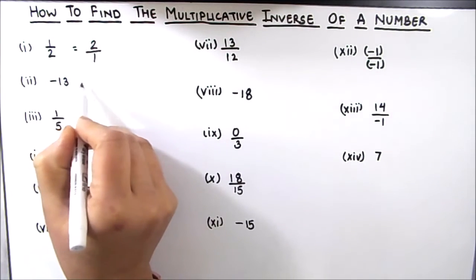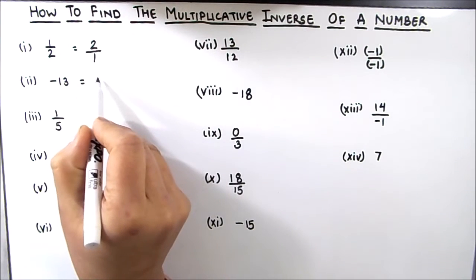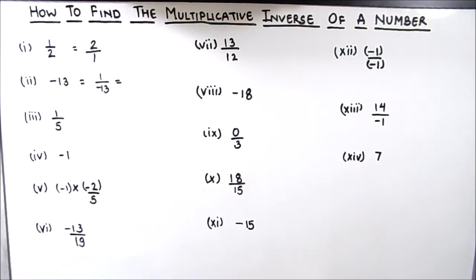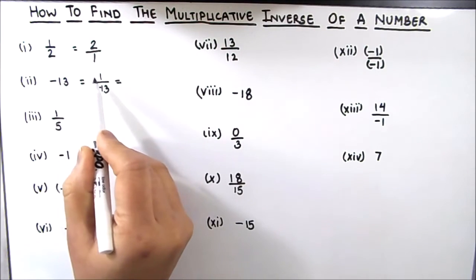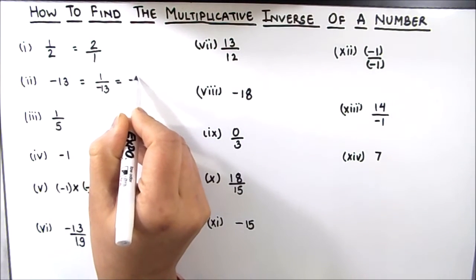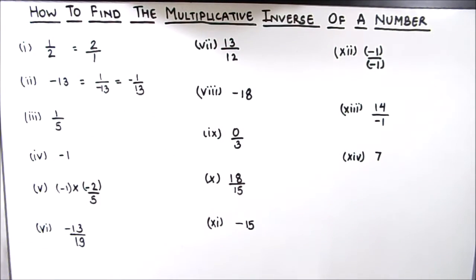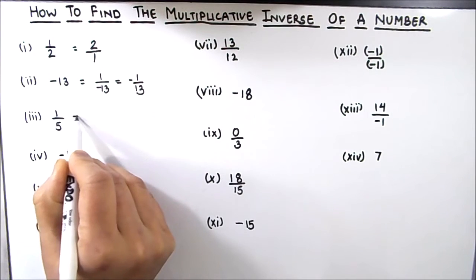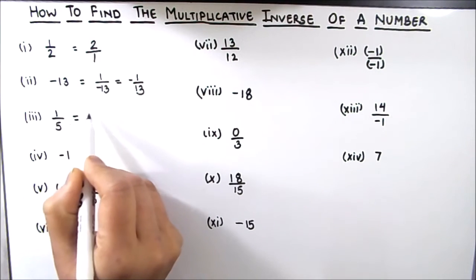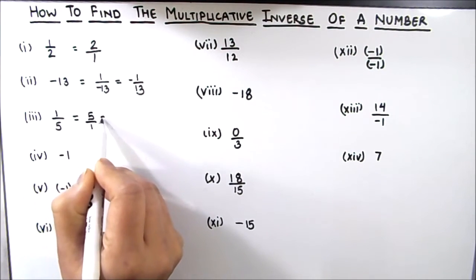Let us now solve these examples. The second one is negative 13. The reciprocal of negative 13 will be 1 divided by negative 13. Whether the negative sign is in the numerator or denominator, the negative sign will stay with the number, so this is negative 1 by 13. The next number is 1 by 5 and the reciprocal will be 5 by 1, which is equal to 5.